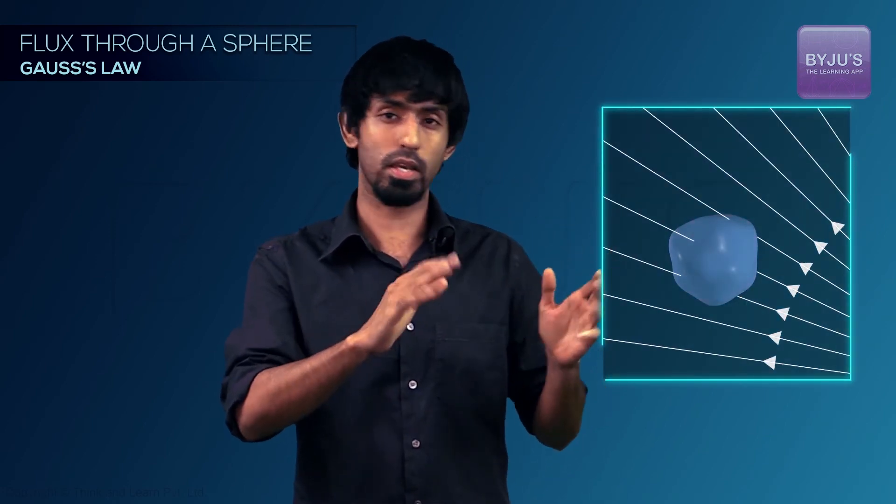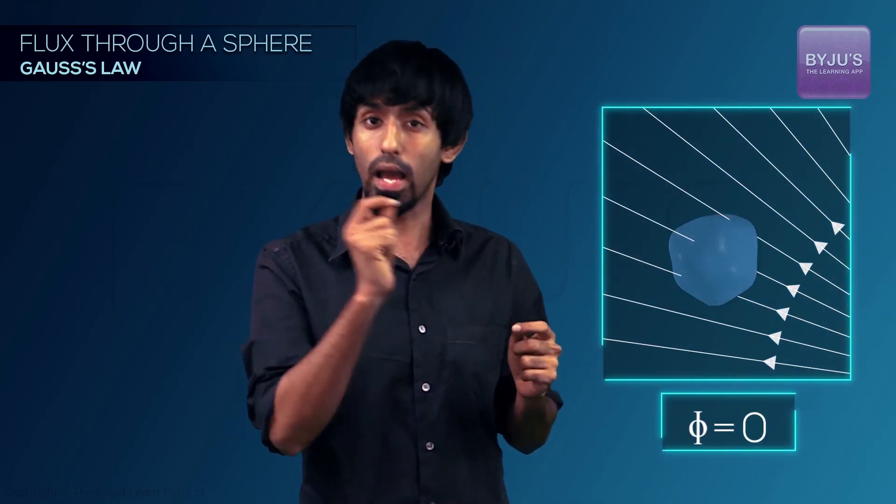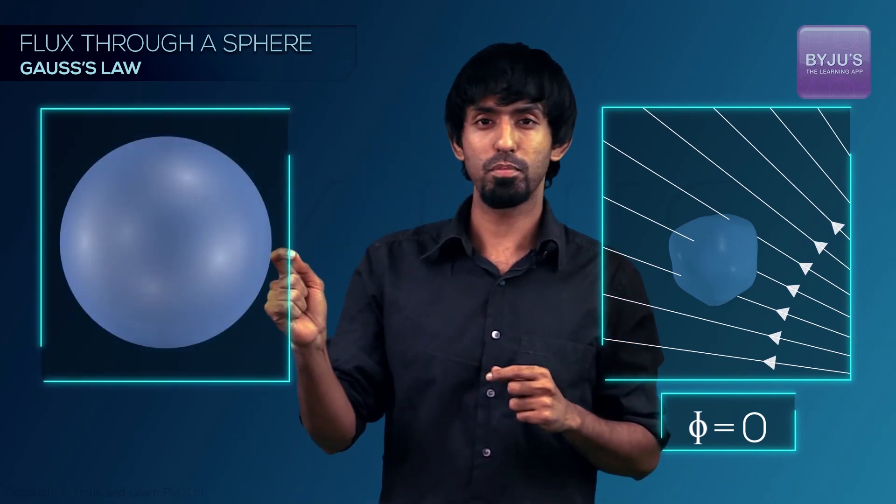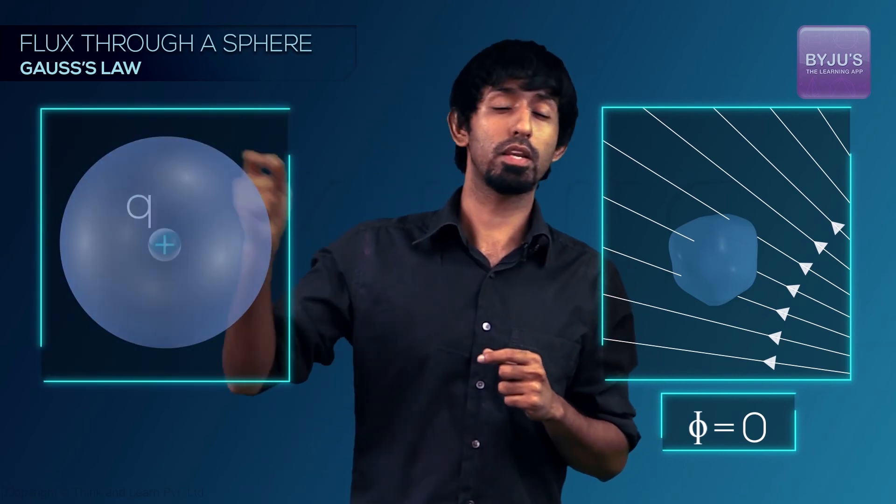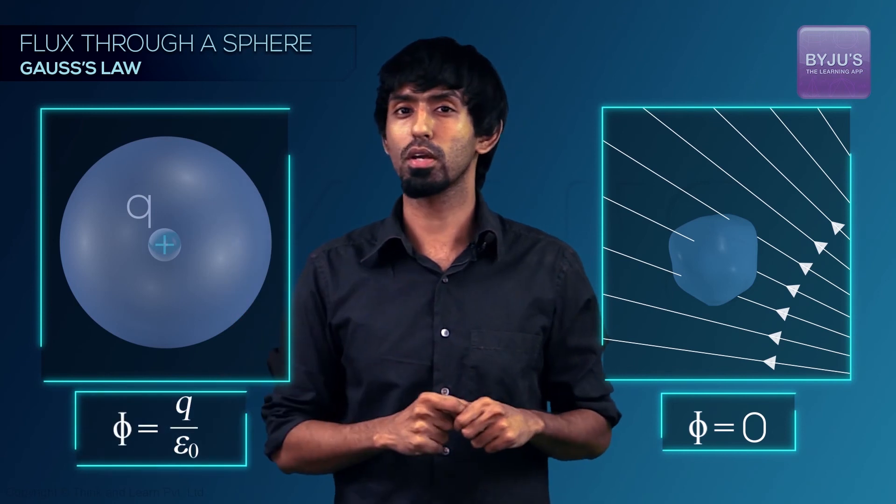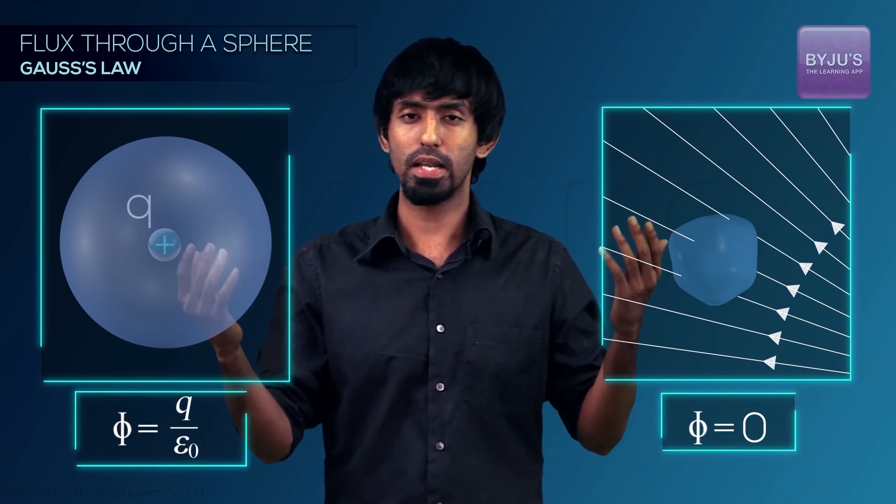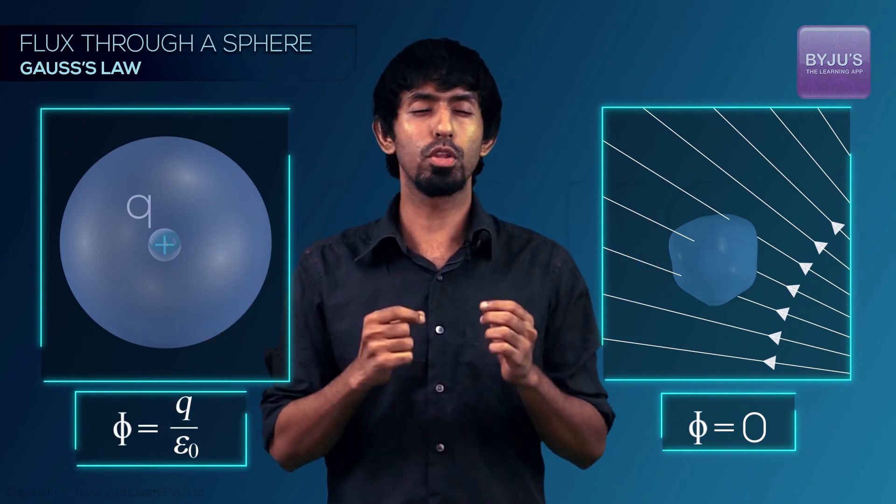What is our statement? This we have proved. What have we proved? That if I have a charge at the center of a sphere, then the net flux passing through that sphere independent of the radius is Q by epsilon naught. So your statement one which is if I have a surface, a closed surface and no charge inside, the net flux through it is zero. And if I have a sphere and a charge Q in the center, the net flux through it is Q by epsilon naught. Now using these two, let's see if we can go to the next step.